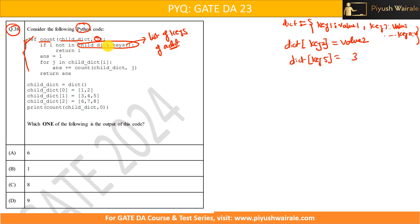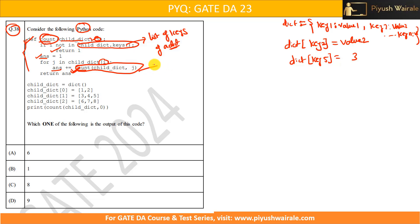Now, if i not in this particular key, we are checking whether this particular i is not in the list. If it is true, then we are going to return 1. If it is not true, then we will go to the next line of code. Here we have defined one variable ans equals to 1. Then we have a for loop — for j in child_dictionary[i] — and i is coming from this particular input. Answer plus-equals count. We are calling the function inside the same function here — this is what recursion is. This question is based on the recursion technique in Python.